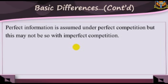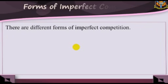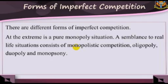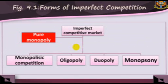Forms of imperfect competition. There are different forms of imperfect competition. At the extreme is a pure monopoly situation. A semblance to a real-life situation consists of monopolistic competition, oligopoly, duopoly, and monopsony.